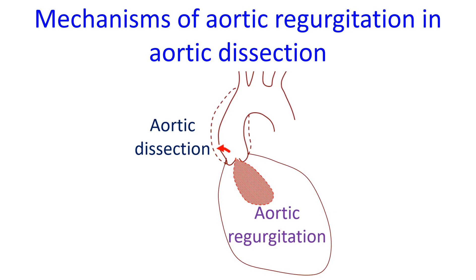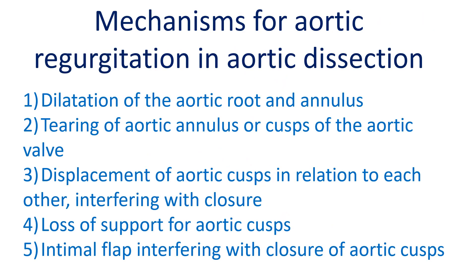Aortic regurgitation is the second most common cause of death in acute aortic dissection, with the most common cause being aortic rupture. It may occur in up to three-fourths of cases of Stanford type A aortic dissection.